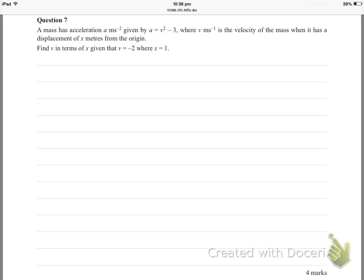A mass has an acceleration given by that function v² minus 3, where v is velocity of the mass when it has a displacement of x meters from the origin. Let's find v in terms of x, as a function of x. We've got some initial condition which we'll use to work out our integration constant c.